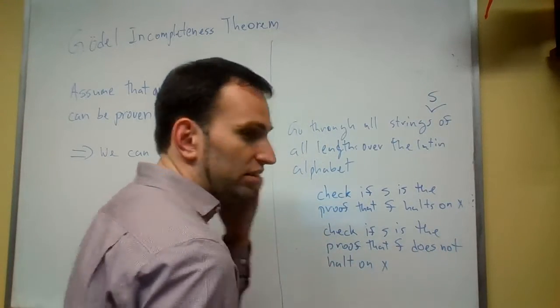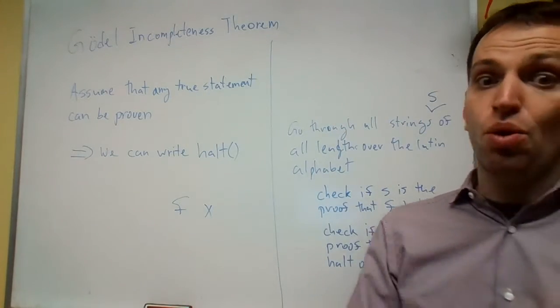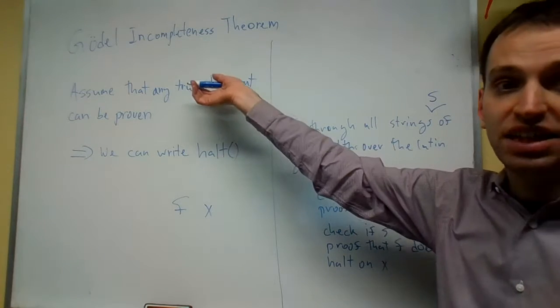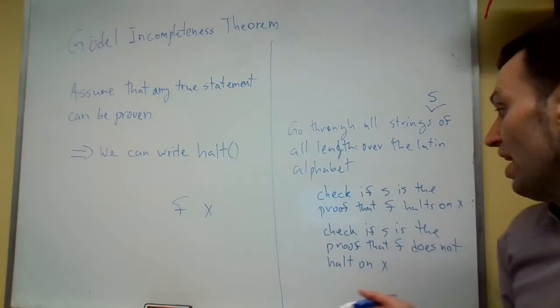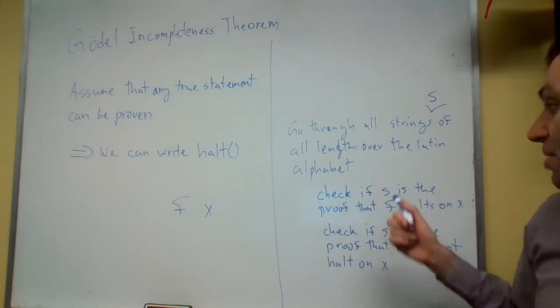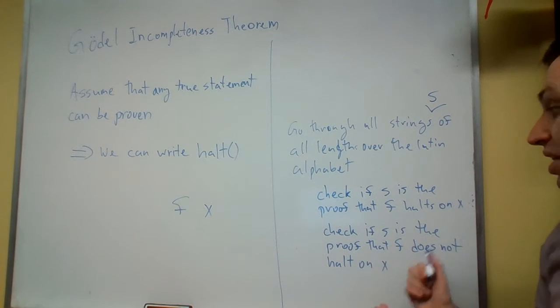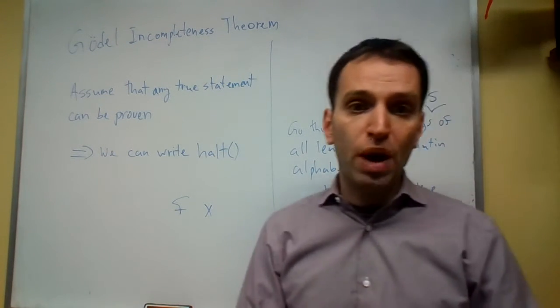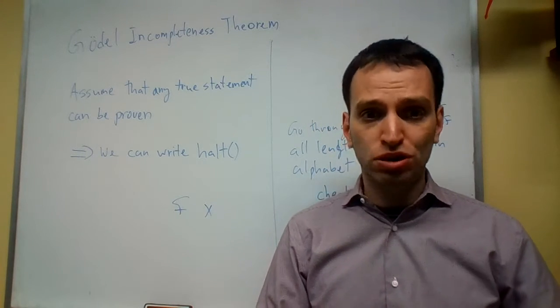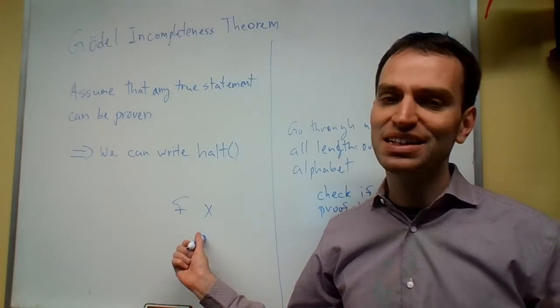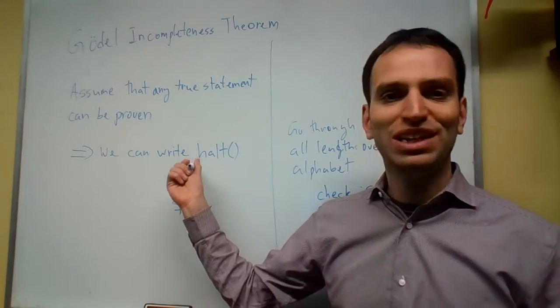And well, f either halts on x or it does not halt on x. So if anything that's true is provable, we'll either find a proof that f halts on x or we'll find a proof that f does not halt on x. Either way, we will have solved the halting problem for the function f on input x. But we proved that we cannot do that.